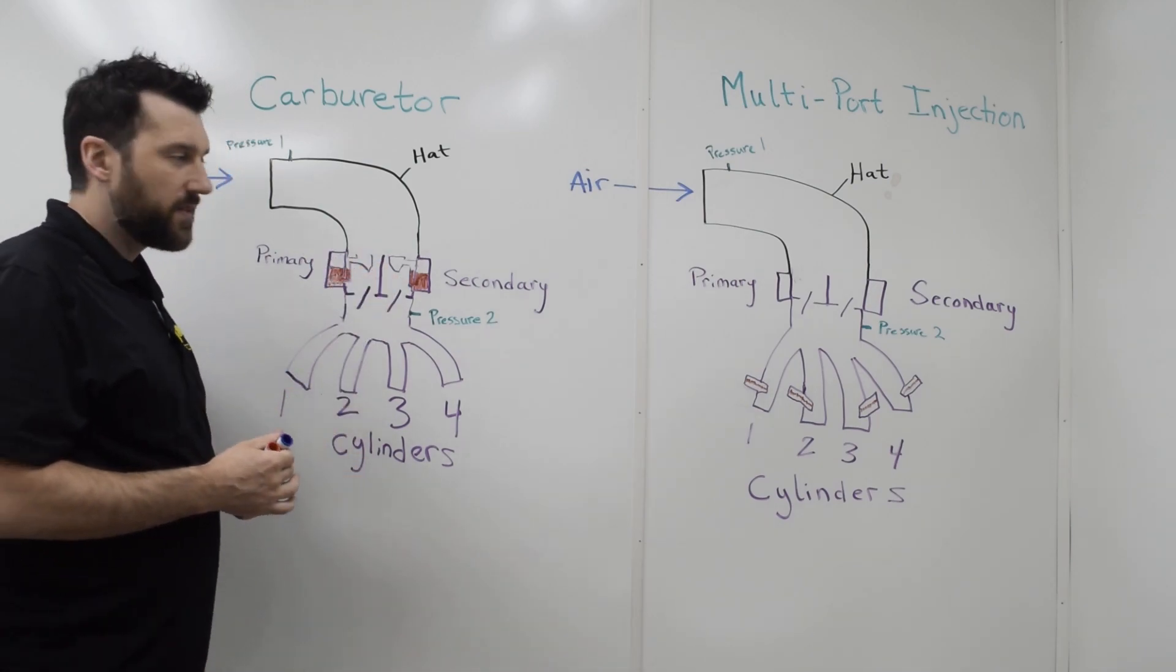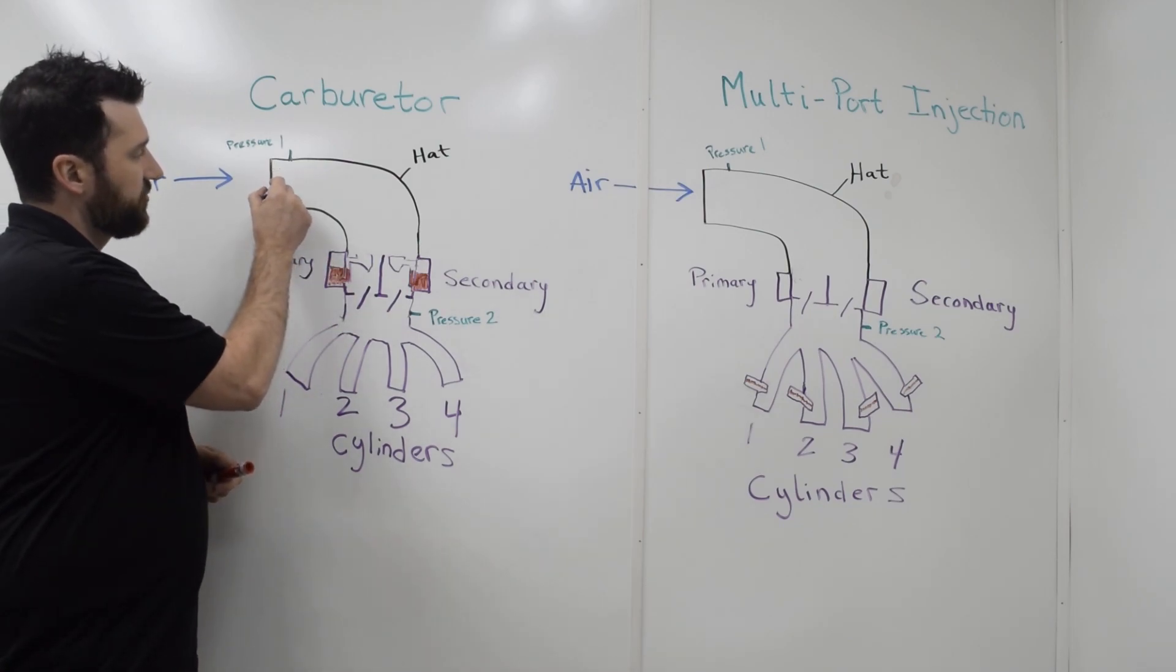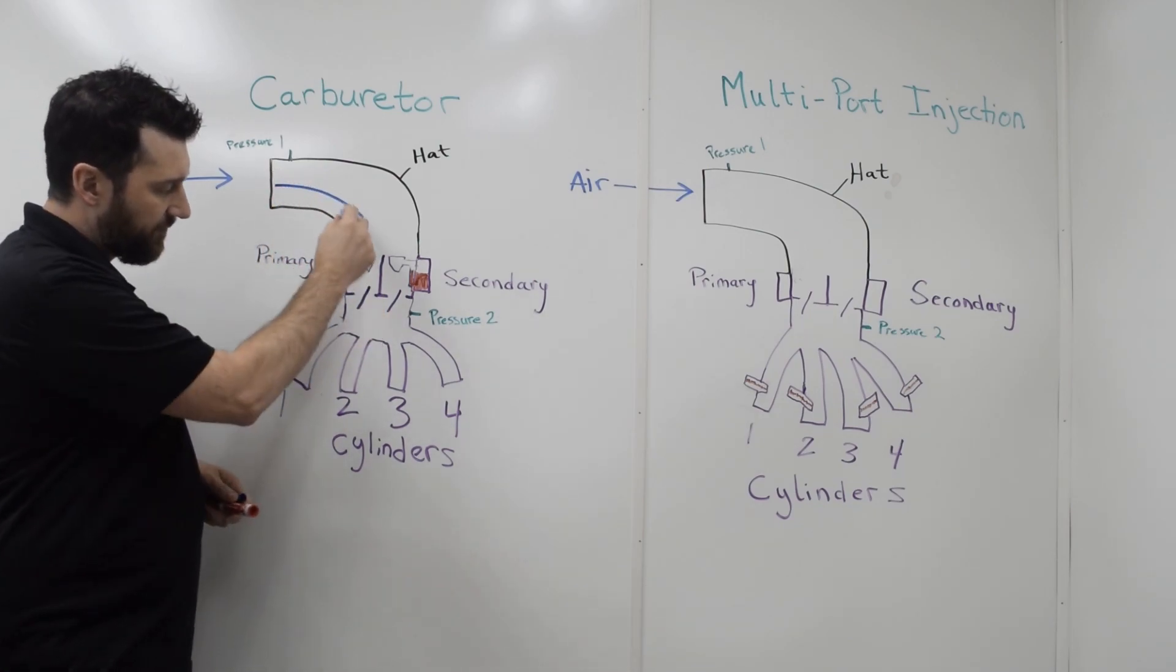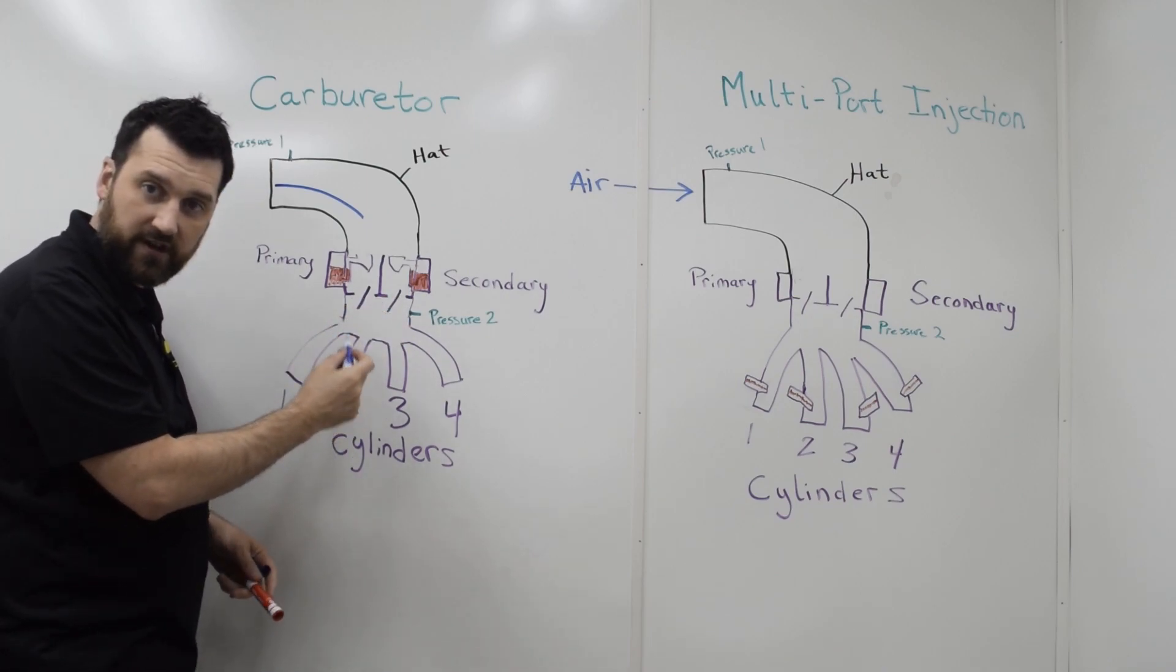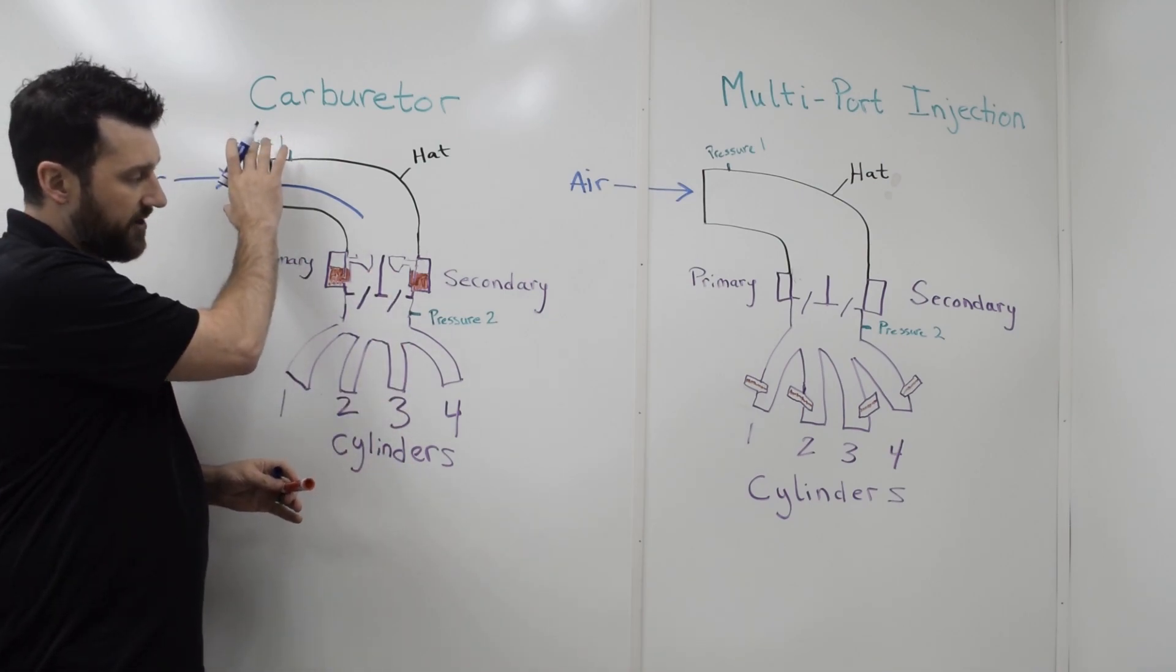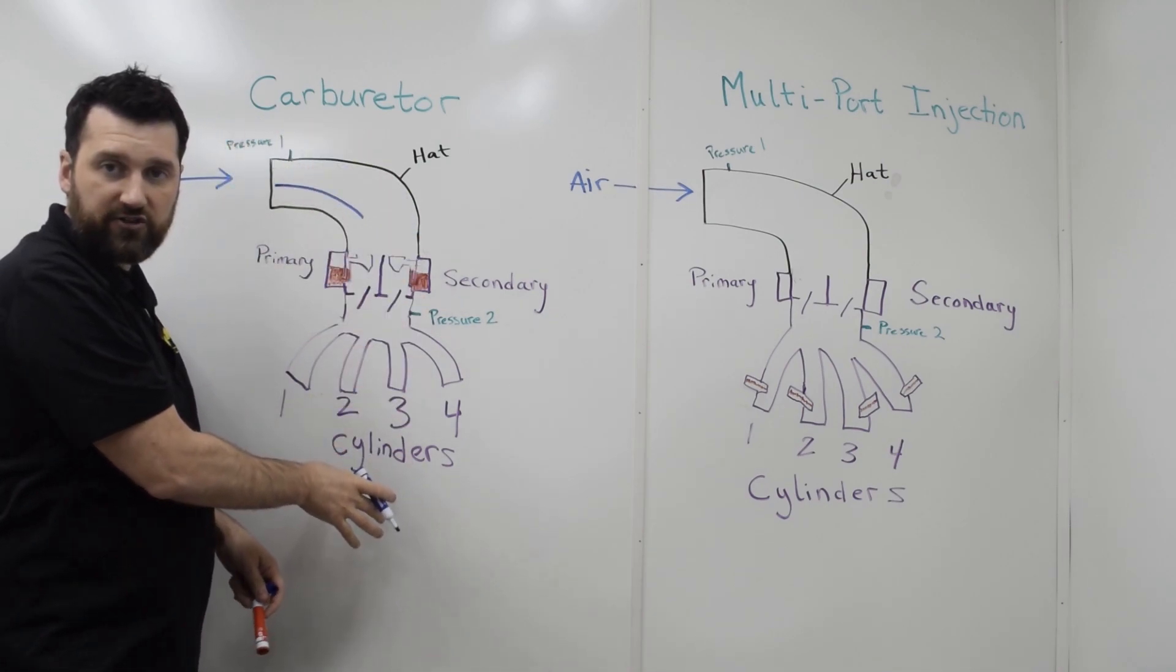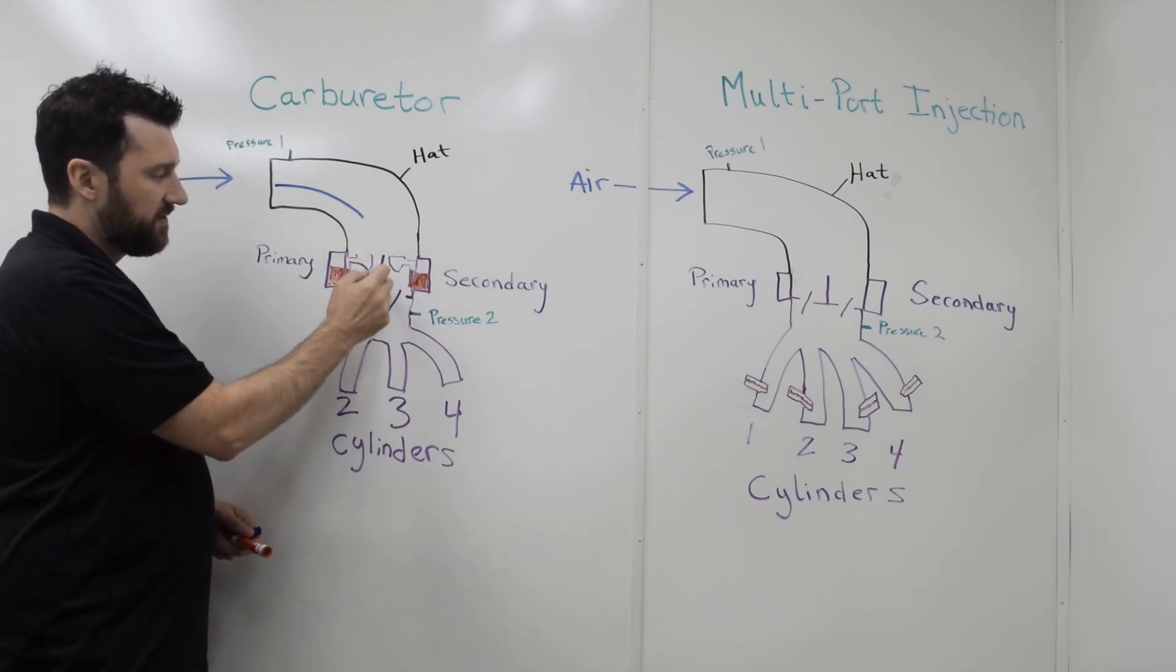In this setup, as air comes through this hat, it follows down to the lower pressure, which is underneath the throttle blades because of the pistons moving and creating a lower pressure. So the high pressure air feeds into the low pressure in the cylinders, and as air passes through these venturis in the carburetor...